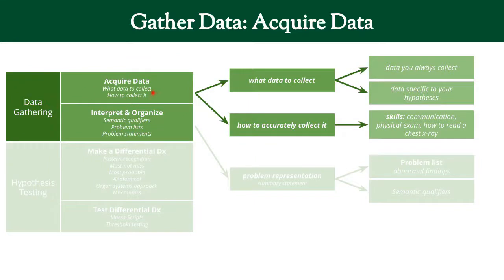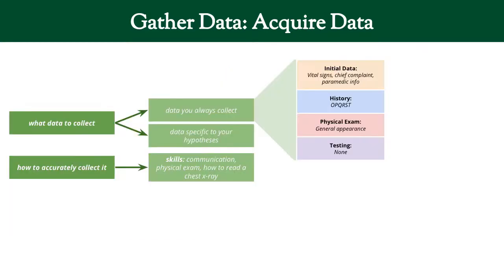The first part, acquiring data, really has two components to it: which data to collect, as well as how to accurately collect that. There's data that you always collect, and there's data that you are going to collect specific to which hypothesis you have. Let's look at it in the context of each of the different places we can get data.